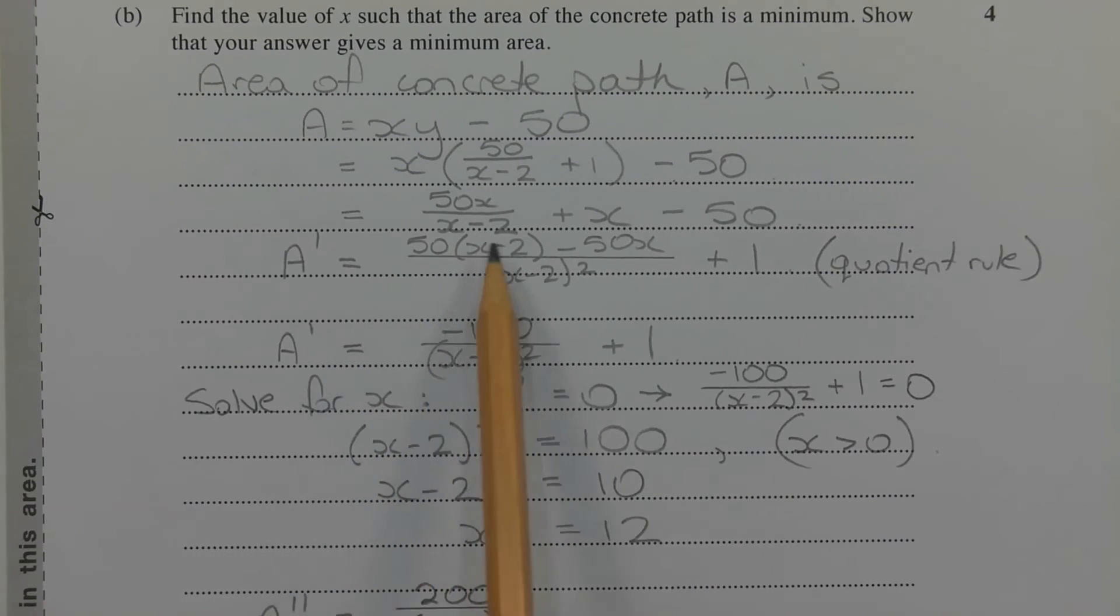Expanding the brackets in the numerator and collecting like terms, we get A dash is equal to negative 100 over x minus 2 in brackets squared plus 1.